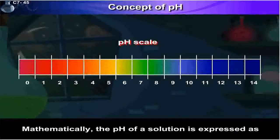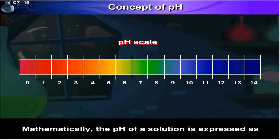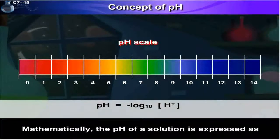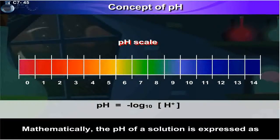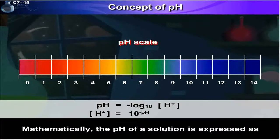Mathematically, the pH of a solution is expressed as pH equals minus log to the base 10 of molar concentration of H+ ions. Hence, molar concentration of H+ ions equals 10 to the minus pH.